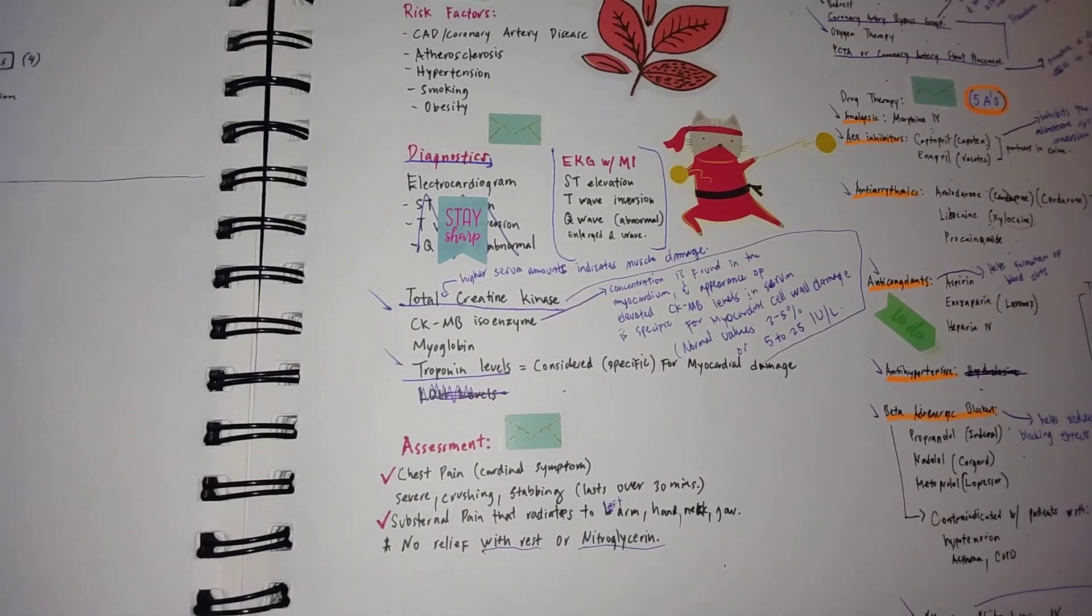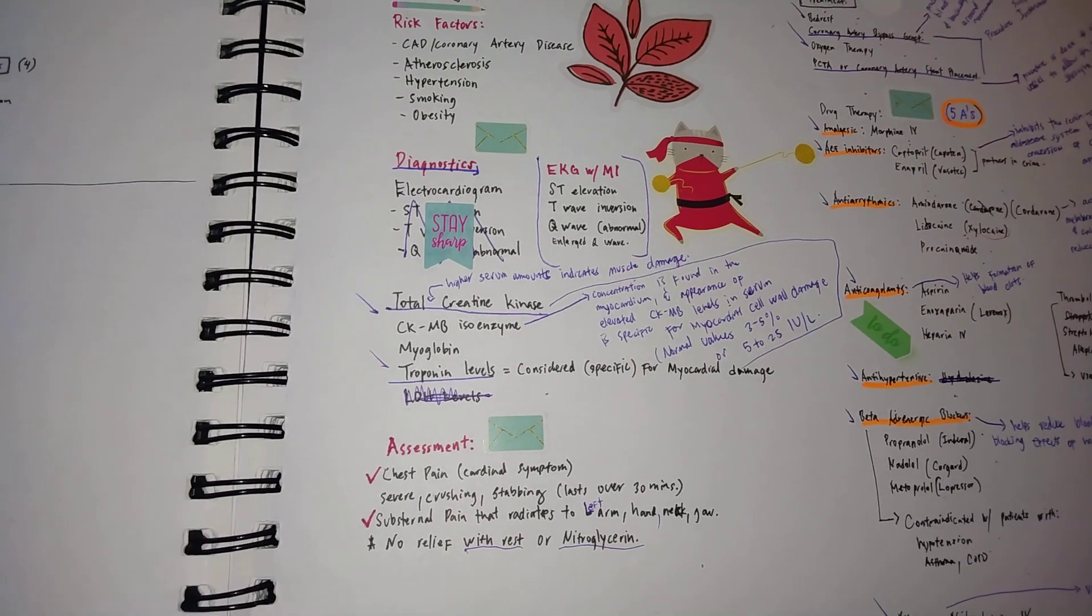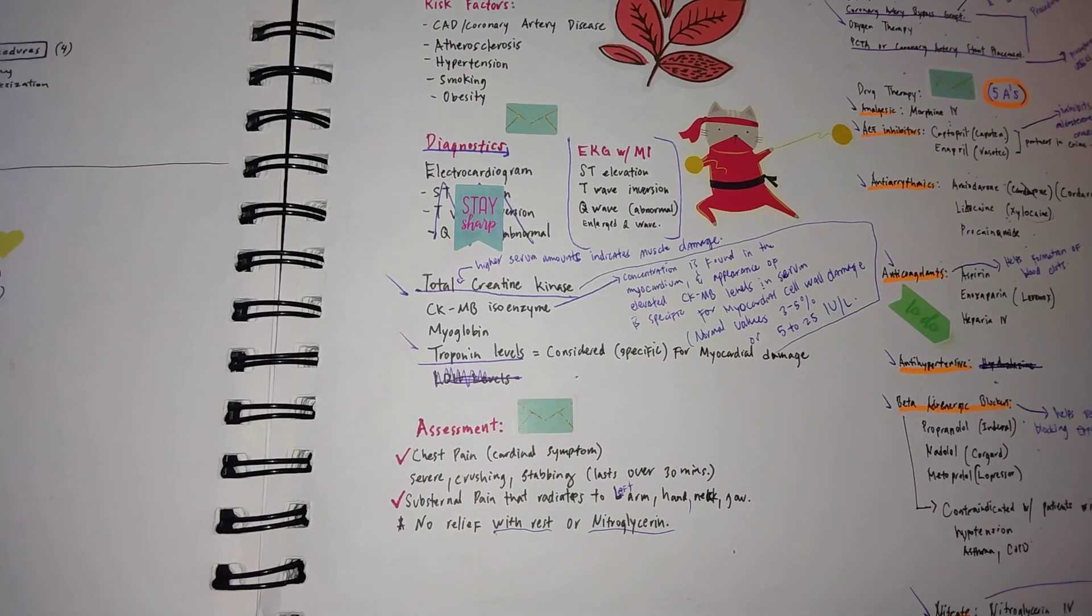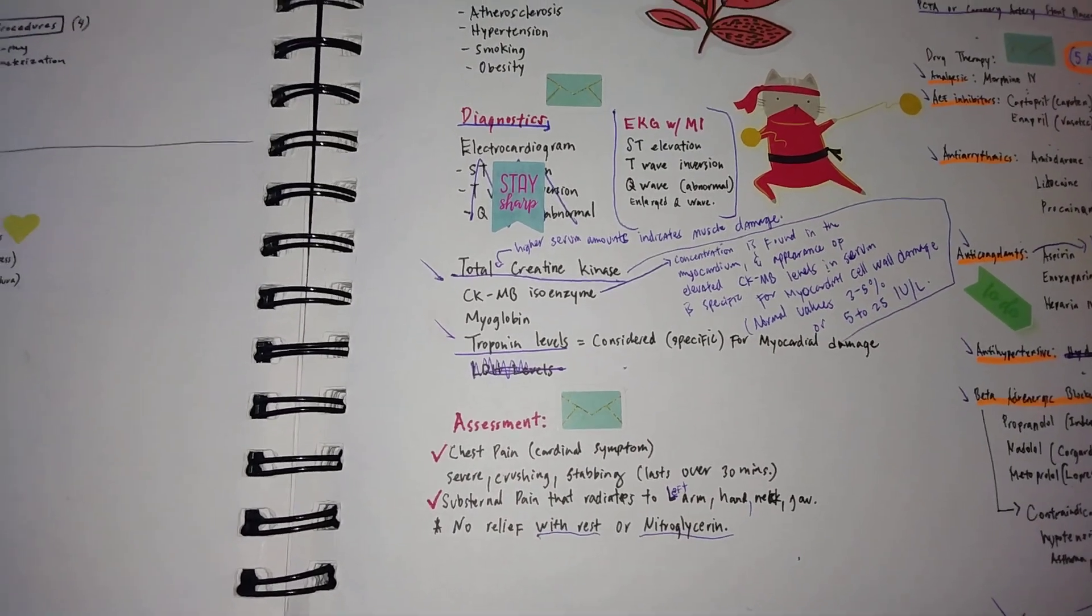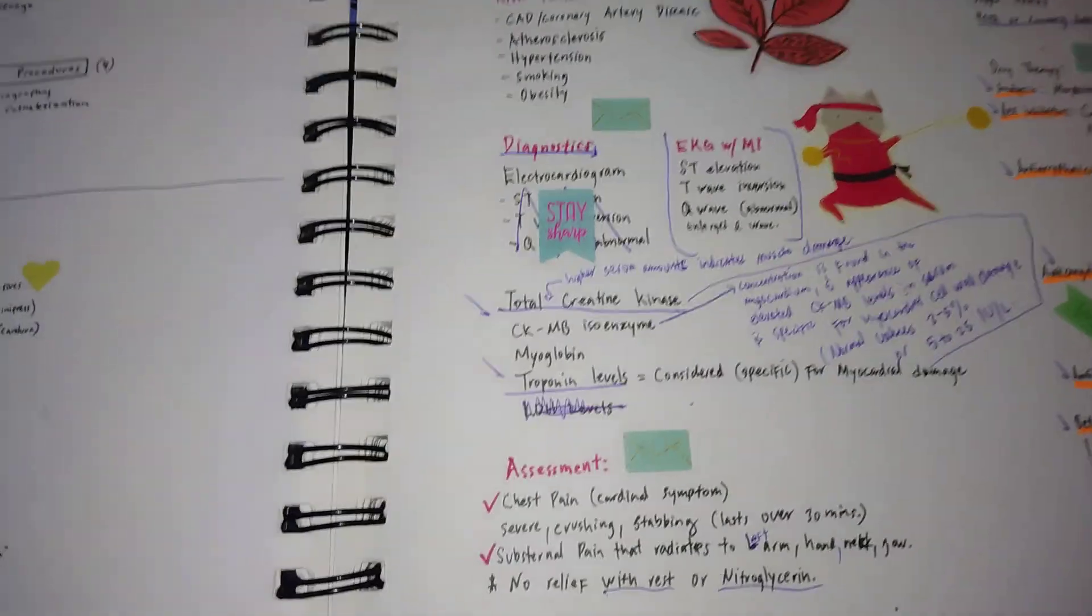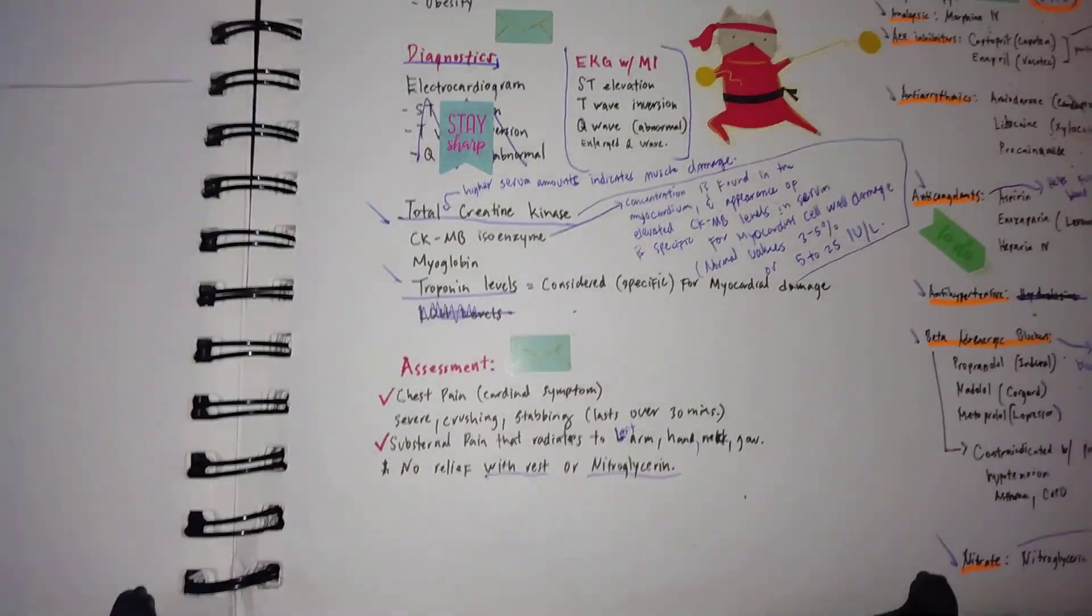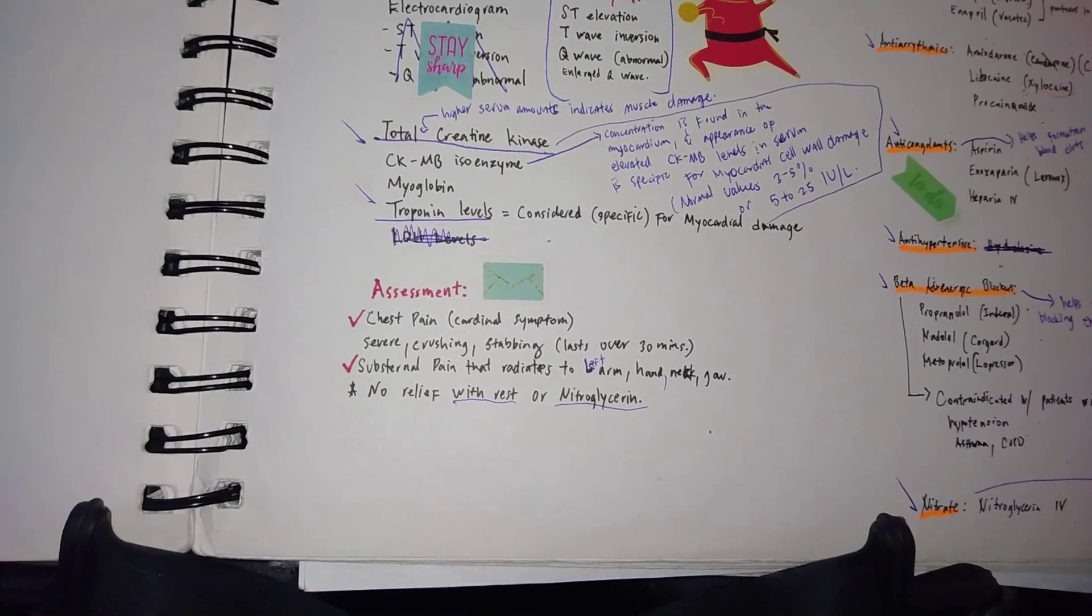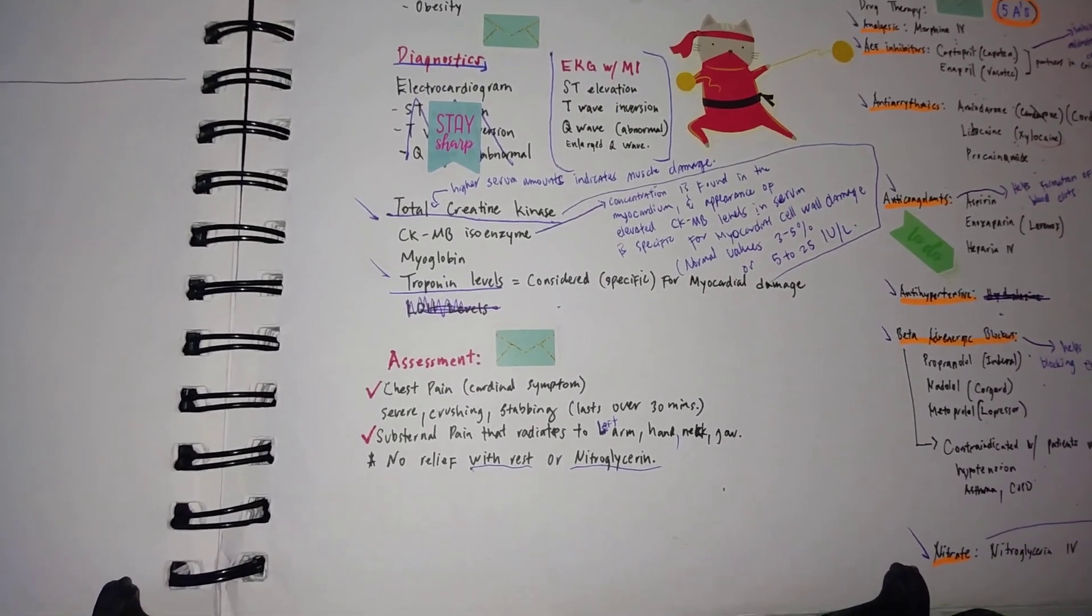The main diagnostic we're looking at is electrocardiogram. With the EKG, with a patient with MI, usually there would be an ST segment elevation, the T wave would be inverted, and the Q wave would be abnormal. There would be an enlarged Q wave in the patient.